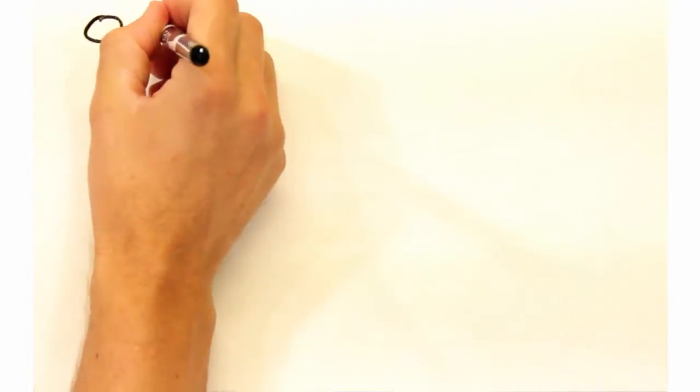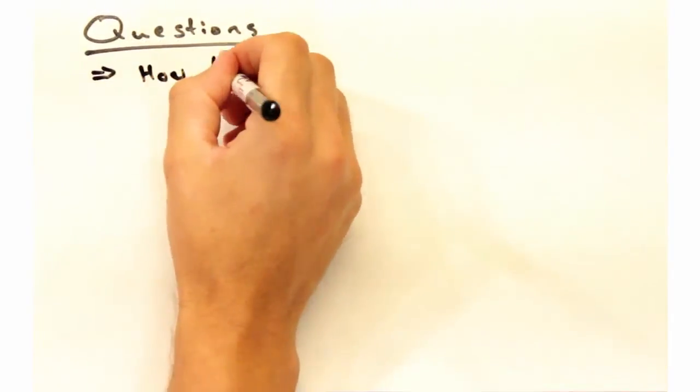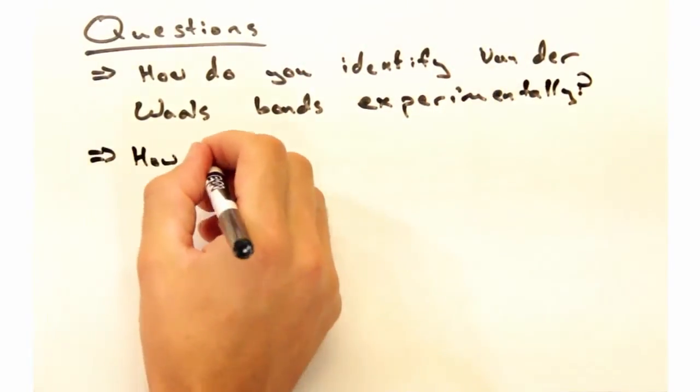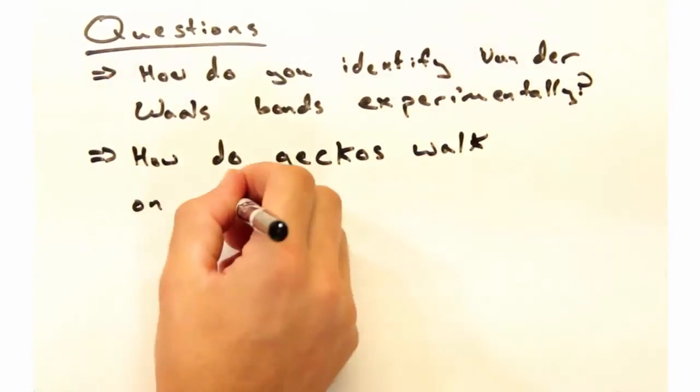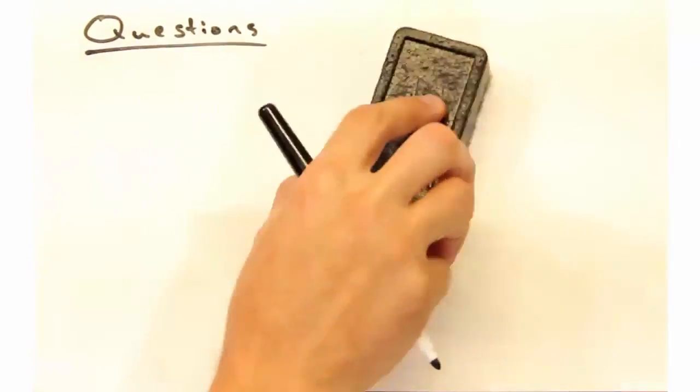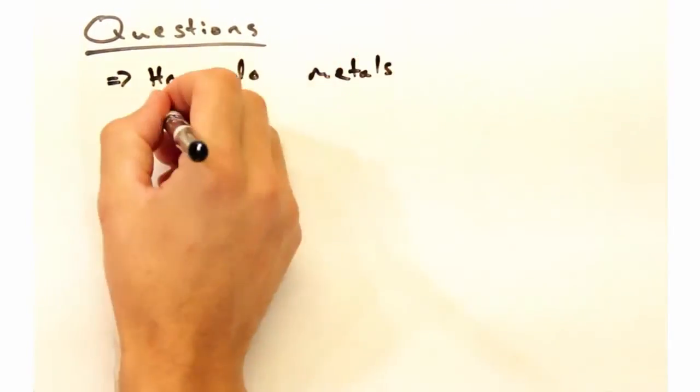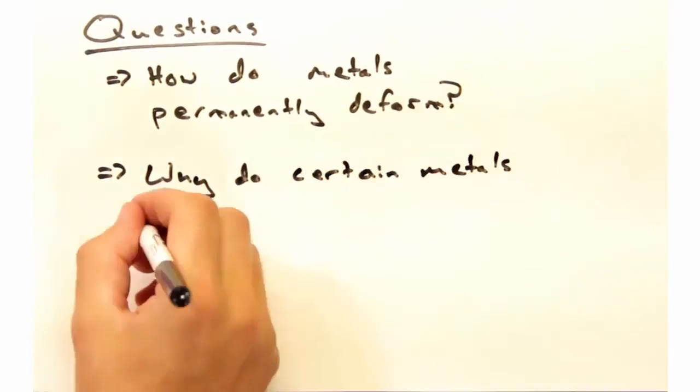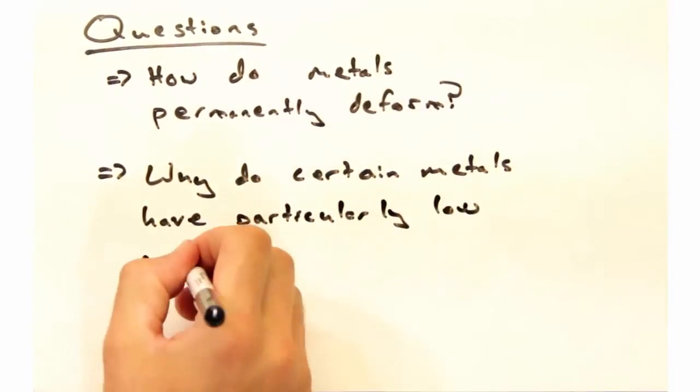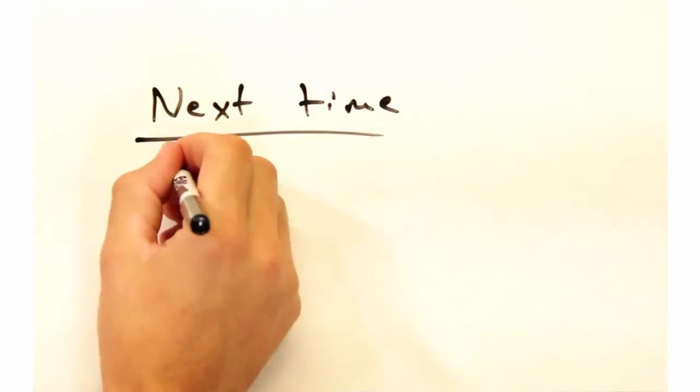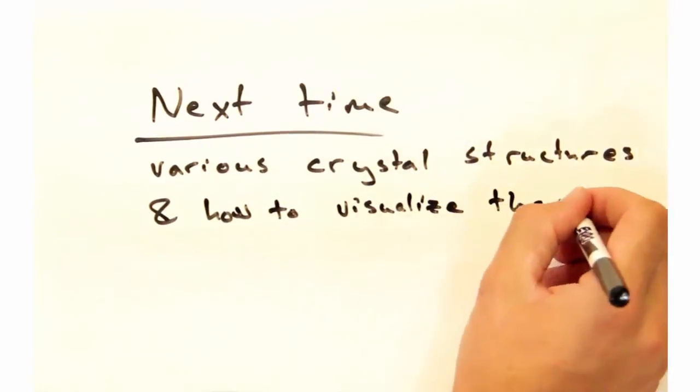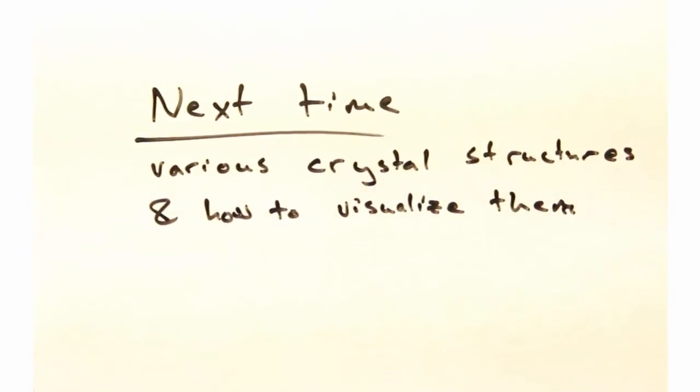As always, here are some questions to ponder. First, how would one identify van der Waals bonds experimentally? Another one, how do geckos walk on walls? And thinking about metals, how could one explain how they permanently deform, and why do certain metals like gallium have particularly low melting points? Okay folks, thanks for watching Solid State Physics in a Nutshell. Next week we're going to take a look at various crystal structures and different methods of visualizing them. See you next time!